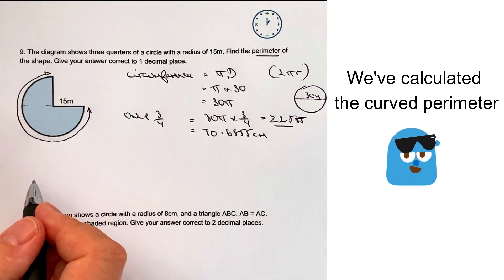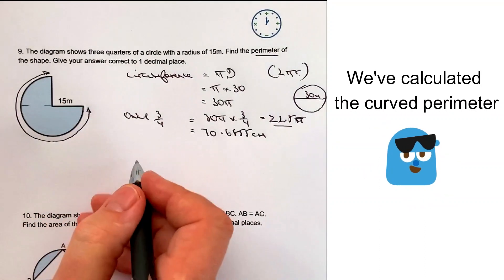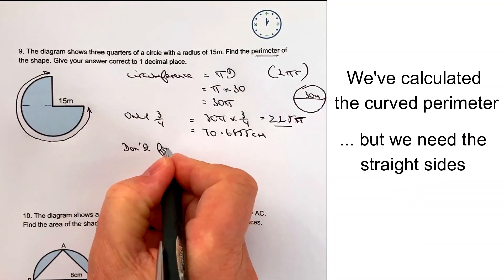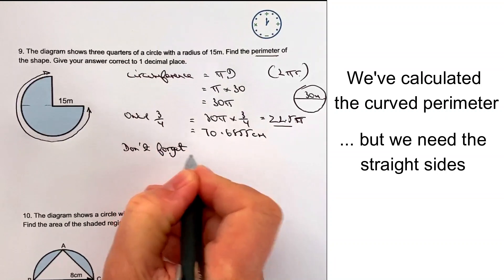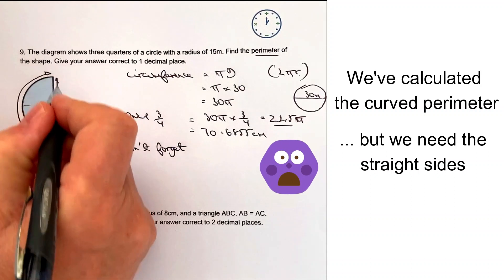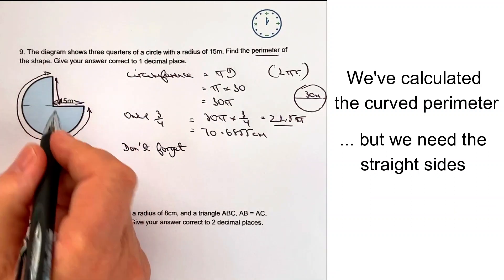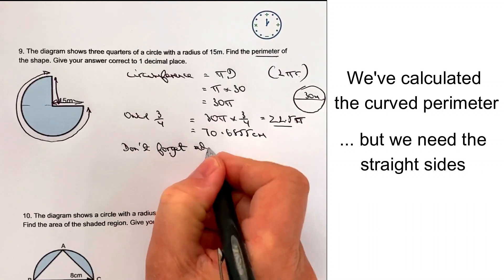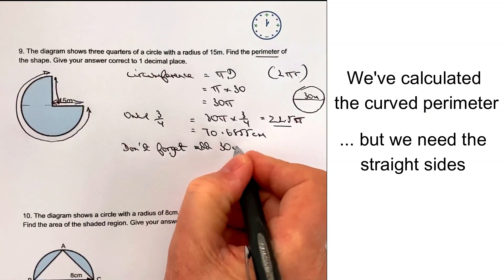But we're being asked to work out the total perimeter, so we mustn't forget. Don't forget the additional slight extra bit, which is this bit, which is 15 centimetres. And because it's a circle, this bit is also 15 centimetres. So we need to add 30 centimetres.